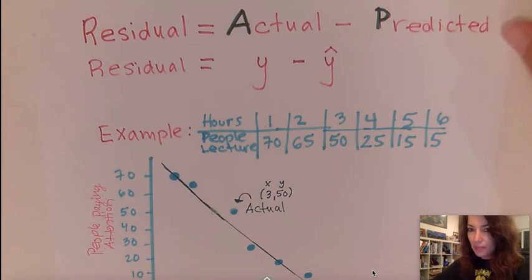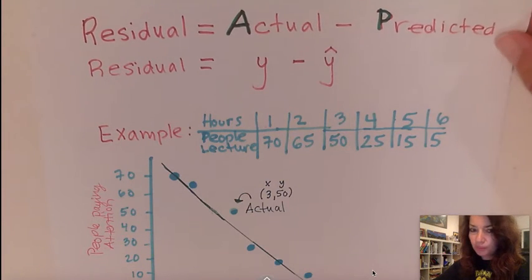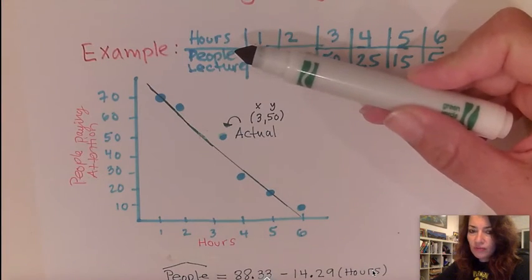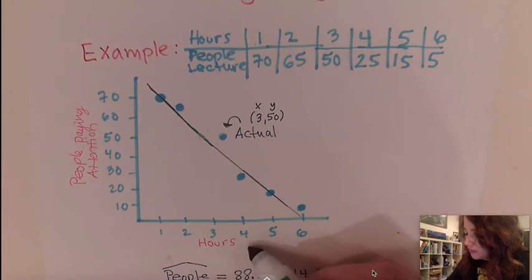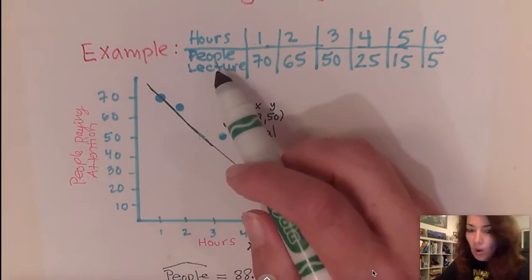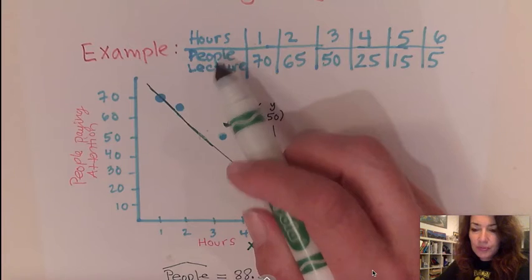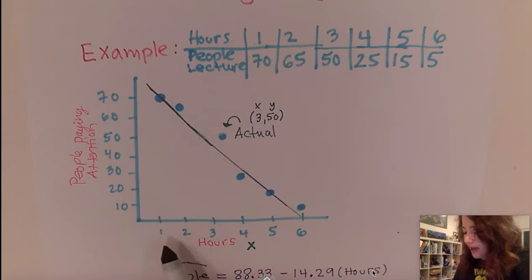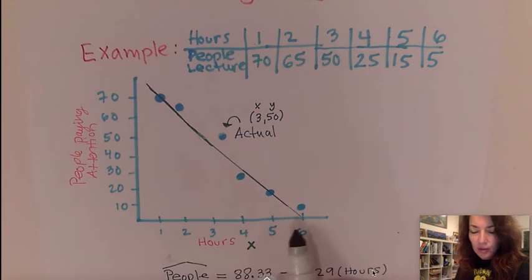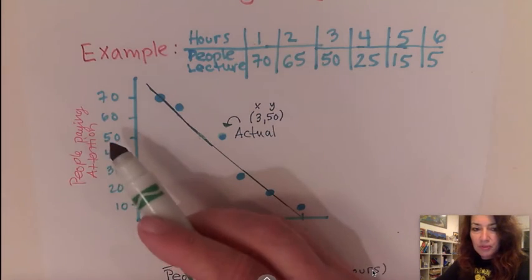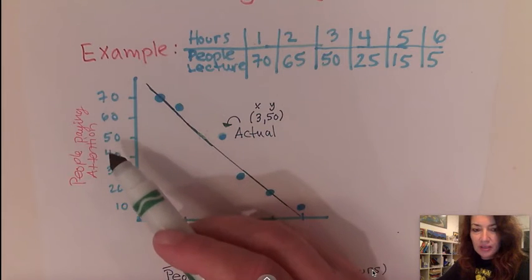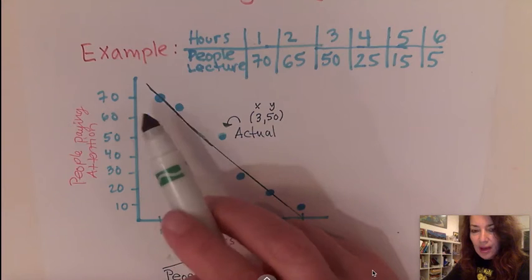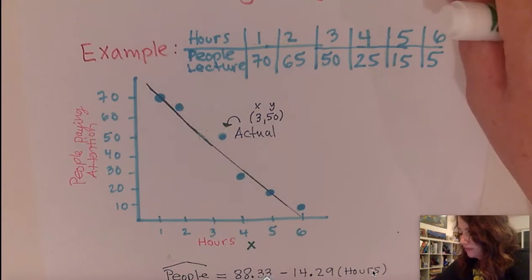So let's look at an example of how we would calculate a residual. Here is an example where the explanatory variable X is represented by hours and Y is represented by people attending a lecture. So as the hours get larger, the number of people decrease, their attention span decreases.